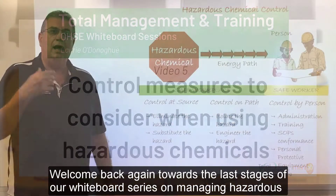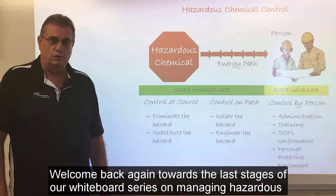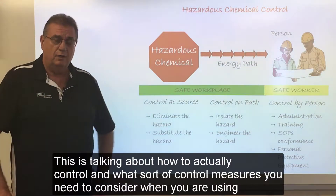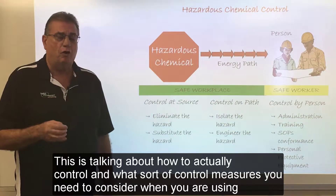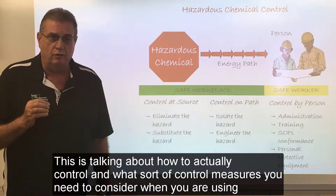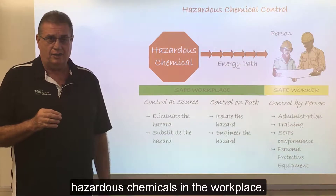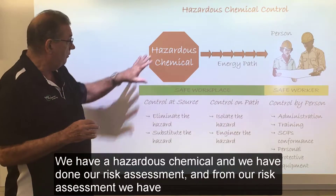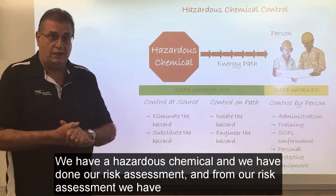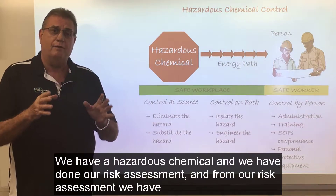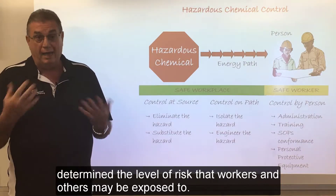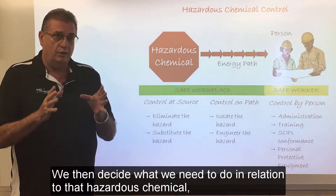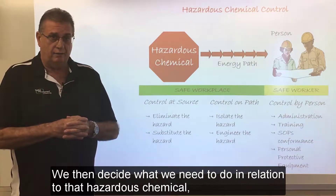Welcome back to the last stages of our whiteboard series on managing hazardous chemicals. This is talking about how to actually control and what sort of control measures you need to consider when you are using hazardous chemicals in the workplace. I'm going to use this simple flow to illustrate it. We've got a hazardous chemical, we've done our risk assessment, and from that we have determined the level of risk that workers and others may be exposed to.